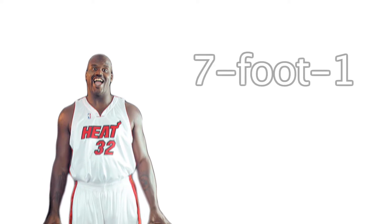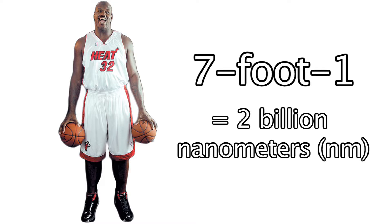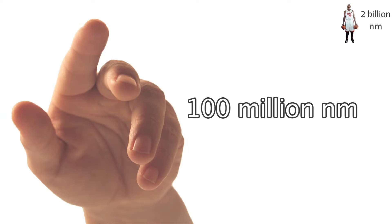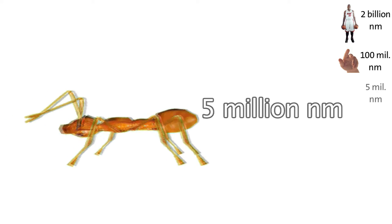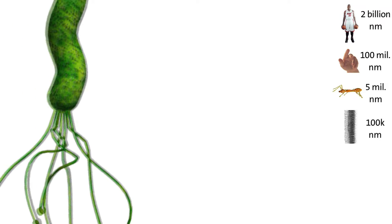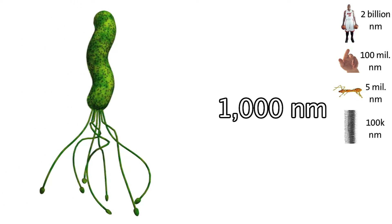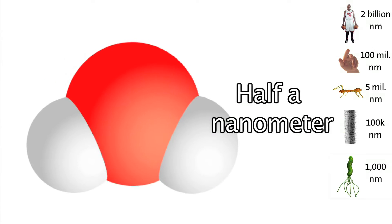Let's get a sense of just how small that is. NBA superstar Shaquille O'Neal is seven foot one, which works out to be about two billion nanometers tall. A hand is one hundred million nanometers long. An ant is five million nanometers long. A strand of hair is about a hundred thousand nanometers wide. A typical germ is only about one thousand nanometers long. A water molecule is about half a nanometer.